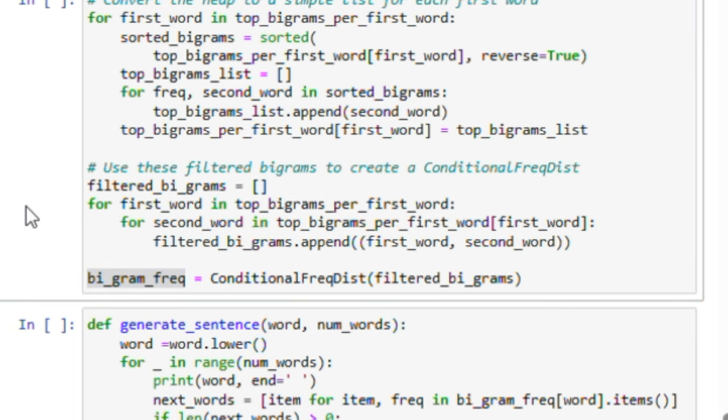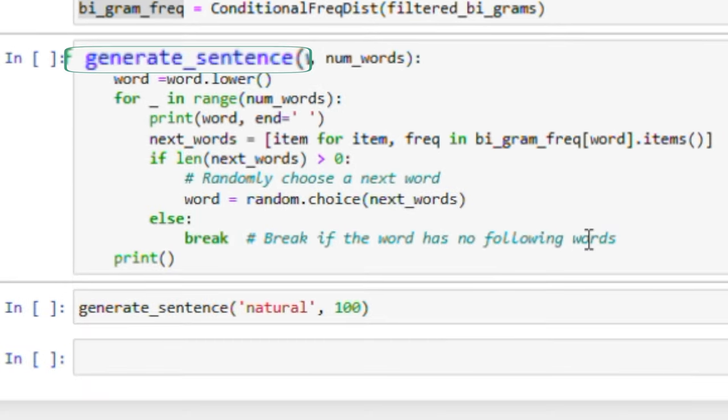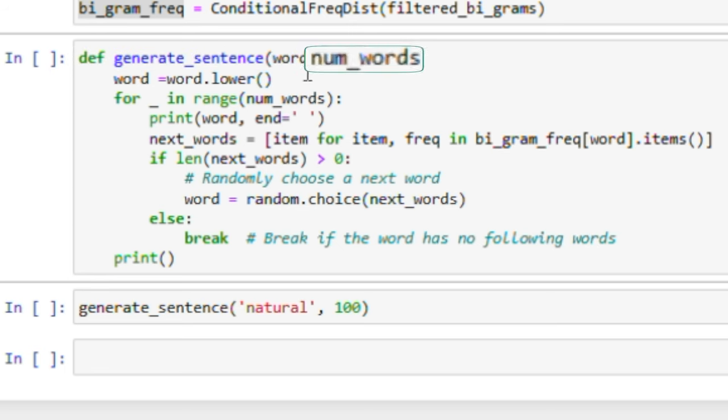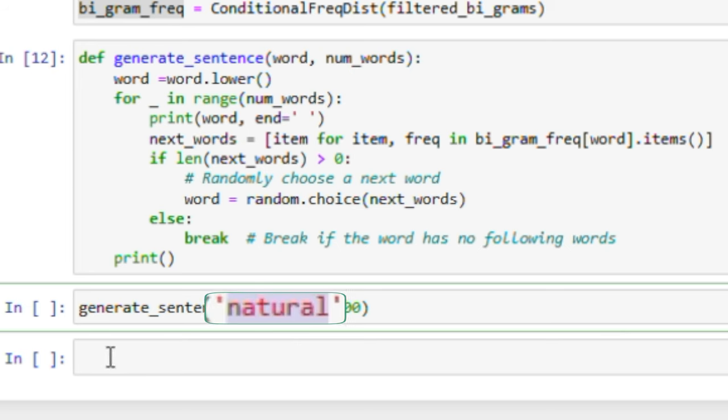Now we define a function named generate_sentence to create text of this many words. Starting with a given word, the function picks the next word based on our bigram model creating a chain of words. Let's test our model by generating a sentence starting with the word natural.